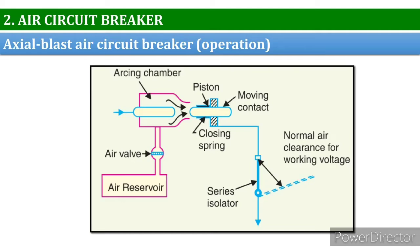Consequently, the arc is extinguished and current flow is interrupted. One important point is that the contact separation required for interruption is generally very small — typically 1.5 to 2 centimeters. An isolating switch is incorporated as part of this type of circuit breaker.